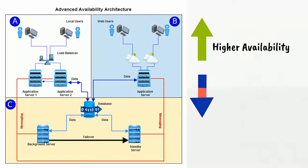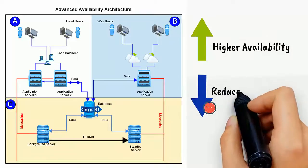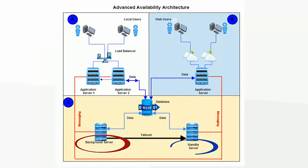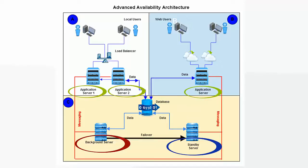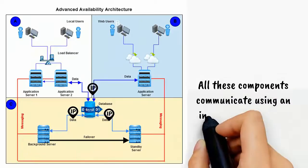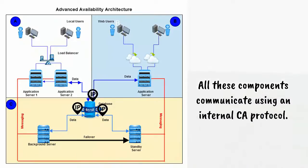The Advanced Availability configuration provides higher availability, reduces downtime, and supports rolling maintenance. It includes a background server, one or more standby servers, and one or more application servers. To reduce the single point of failure, each of these servers has a direct connection with the database. All these components communicate using an internal CA protocol.